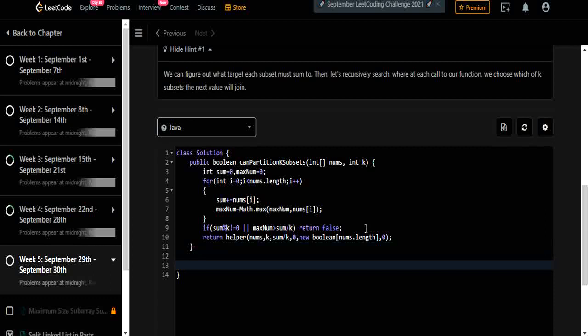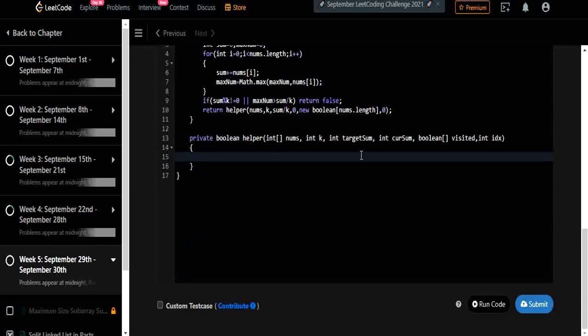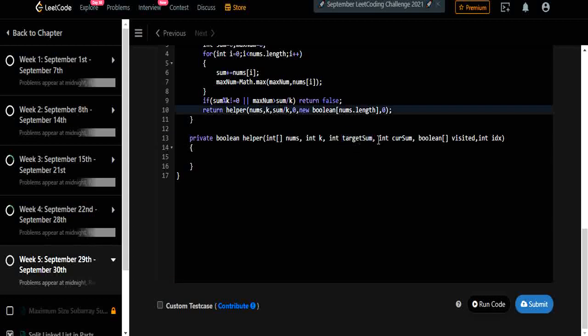And this new boolean array to mark whether the cells are visited or not. Now let's spend some time in writing our helper method. We are getting the target sum that is sum by k of each subset and visited array to keep track of what are the elements we have already used in our array. And index is to start from the zeroth index and travel till the last index.